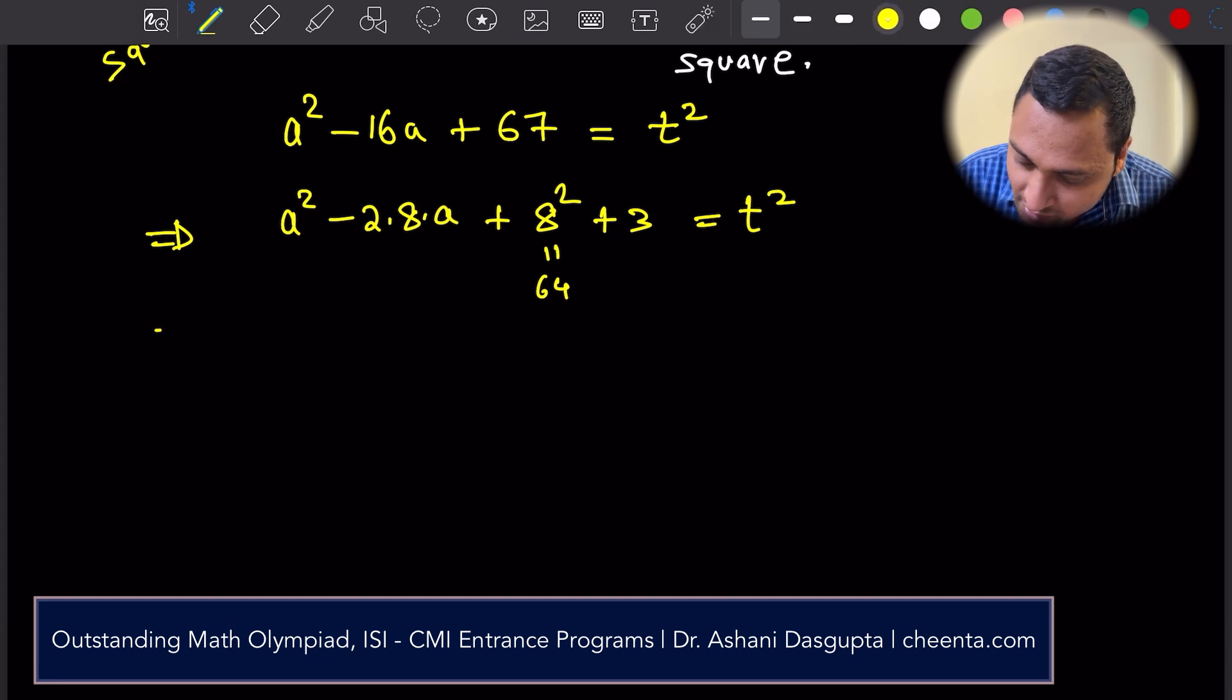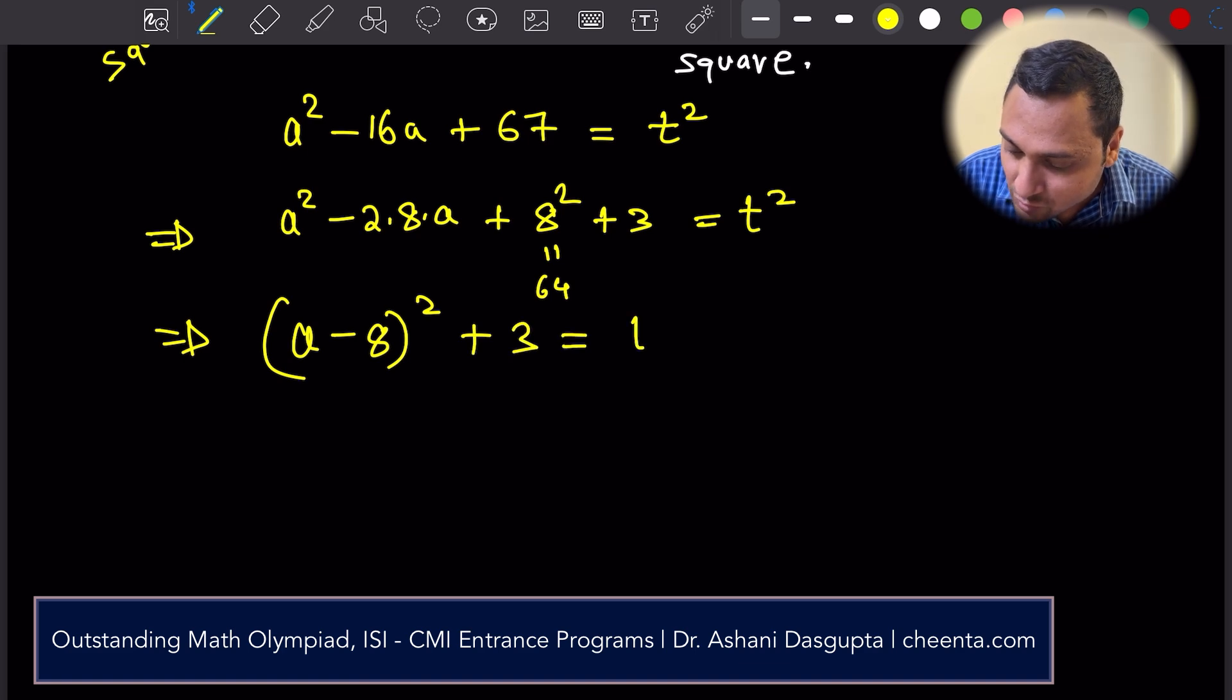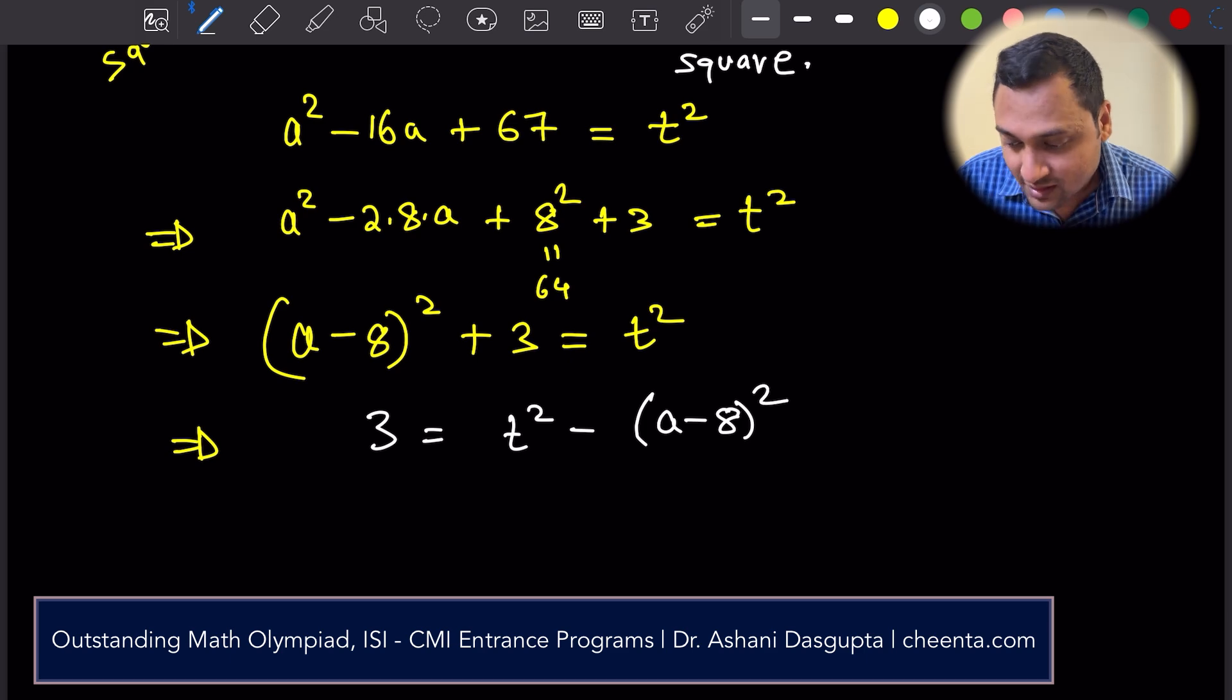Let's write down. This is a minus 8 whole square plus 3 is equal to t square. I'll just put the 3 on the left-hand side.